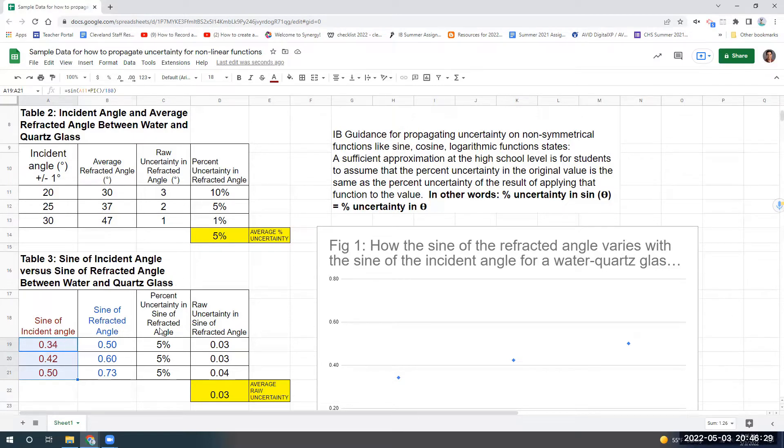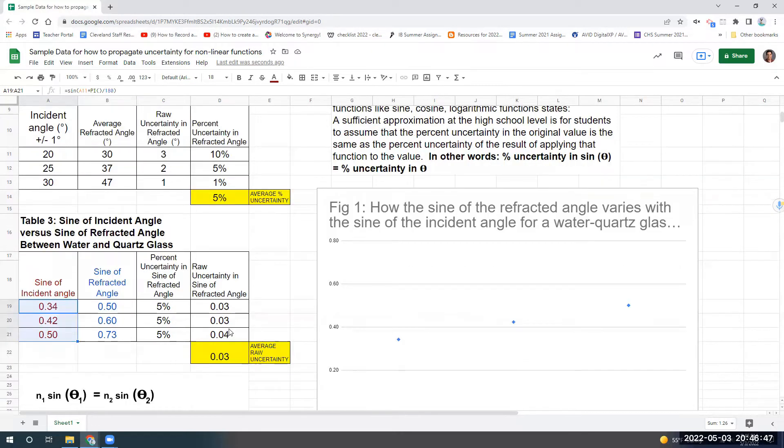Now notice I've taken the third column here in table three. I've taken that average uncertainty that I chose, and I've put it to be the same for all of them. And so then to get the raw uncertainty for the sine of the refracted angle for my error bars that I need to plot, I'm going to take that percent uncertainty, multiply it by the value, and get these numbers. And then I'm just going to take the average of the raw uncertainty. Notice I'm basically copying what the actual percent uncertainty is. 10%, 5%, and 1%. I could just say, this is what this is. And notice I get 0.05, 0.03, 0.01. The end result is the same. If I'm going to take the average at the end, the average raw uncertainty is going to be 0.03.